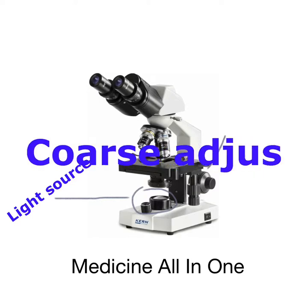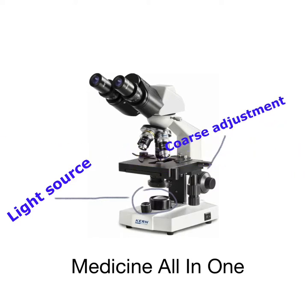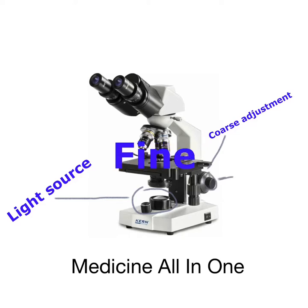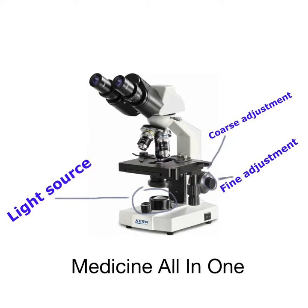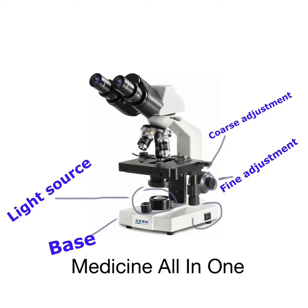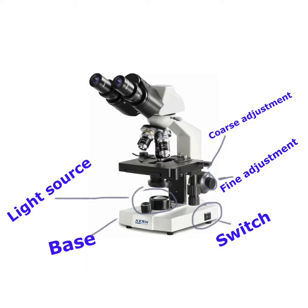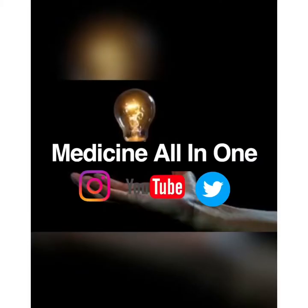On the side of the microscope there are stage adjustment knobs — one is for coarse adjustment, which moves the stage quickly, and the other one is for fine adjustment, which moves the stage with small, minute adjustments. The foot piece consists of a base that provides stability to the microscope, and on the side of the base there is an on/off switch for the light source.